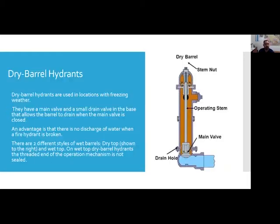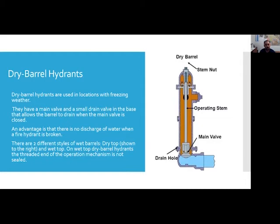Dry barrel hydrants are used in locations with freezing weather. They have a main valve and a small drain valve in the base that allows the barrel to drain when the main valve is closed. An advantage is there's no discharge of water when a hydrant is hit or broken. There are two styles: dry top and wet top — the only difference being whether the threaded end of the operating mechanism is sealed.